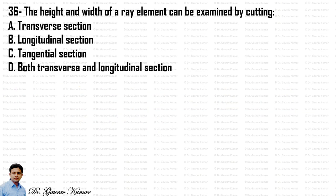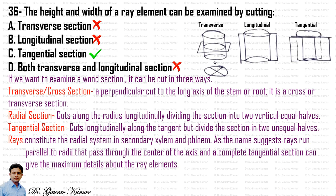The height and width of a ray element can be examined by cutting the tangential section. The answer is tangential section. On the right-hand side are figures showing the three types of sectioning: transverse, longitudinal, and tangential. If you have attended my anatomy lecture, you will be well versed with these three kinds of sectioning.